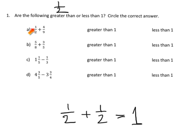So when we look up here, we have a half plus 4 ninths. Well, 4 ninths is a little bit less than a half. So it's going to be a half plus a little less than half. So when we add those two things together, are we going to be greater than 1 or less than 1? We're definitely going to be less than 1.